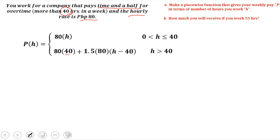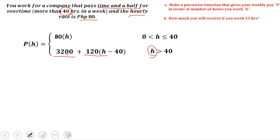For example, if you work 45 hours, you have 5 hours of overtime. So that's 5 times 1.5 times 80. Now 1.5 times 80 equals 120, so 120 pesos is your overtime rate per hour. And 80 times 40 equals 3,200, which is your regular weekly pay. So this is the formula we use when working more than 40 hours; if less than or equal to 40, we use the other formula.